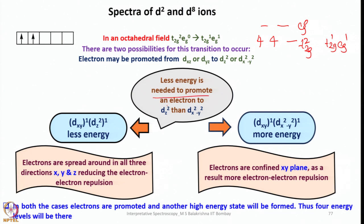Less energy is needed to promote an electron to dz² than to dx²−y². Once you promote the electron to give configuration dxy¹ dz²¹, that is a less energetic transition. Promoting to dx²−y² is a higher energy transition. In the dz² case, electrons spread in all three x, y, z directions, reducing electron-electron repulsion. In the dx²−y² case, electrons are confined to the xy plane because four ligands approach in the x and y directions, increasing metal-ligand and electron-electron repulsion.